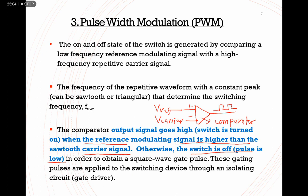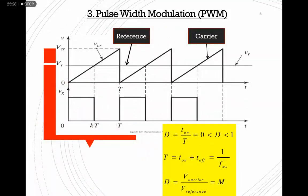These pulses are then fed into the gate terminal of your switch. Remember, for the switch you have three terminals: gate, collector, and emitter. The pulses are applied to the gate terminal. This is the illustration of how PWM works.